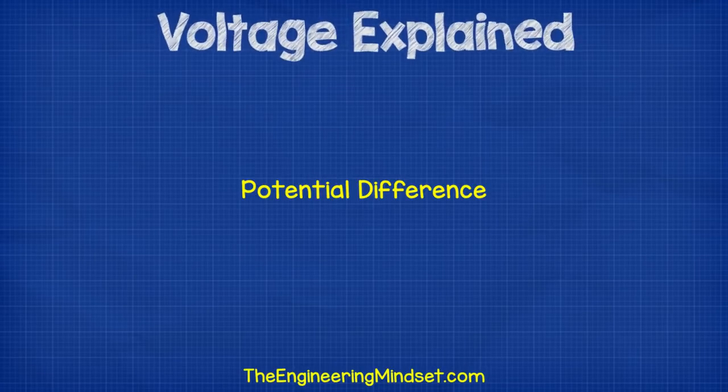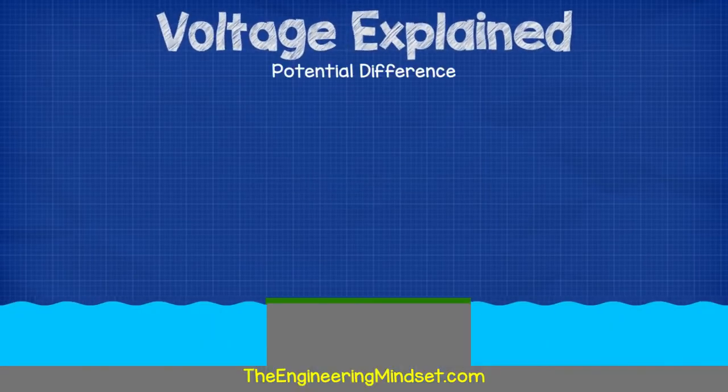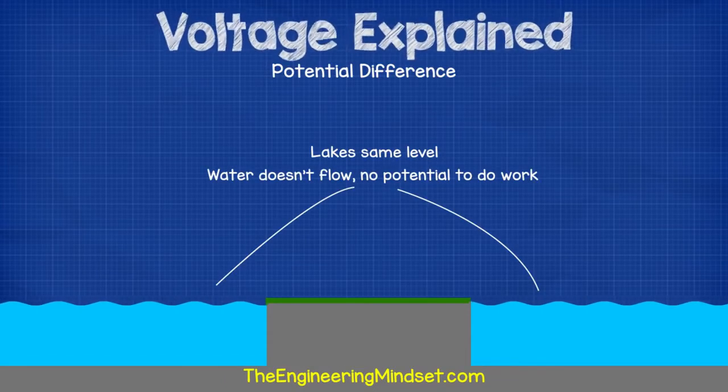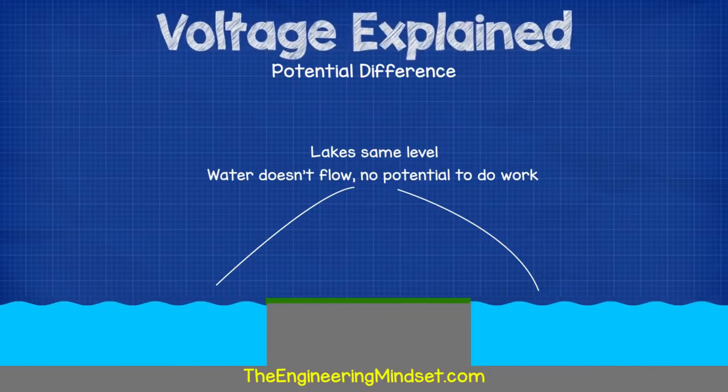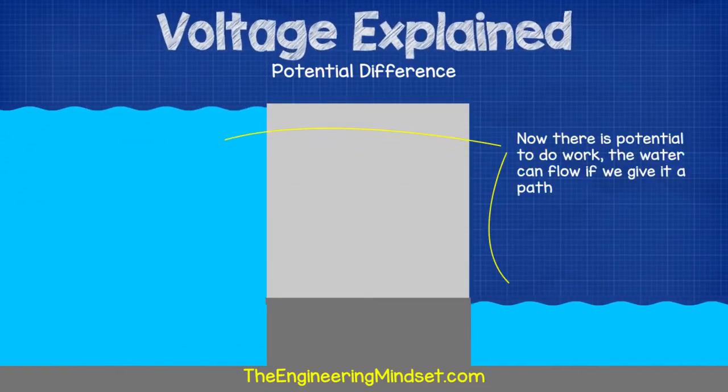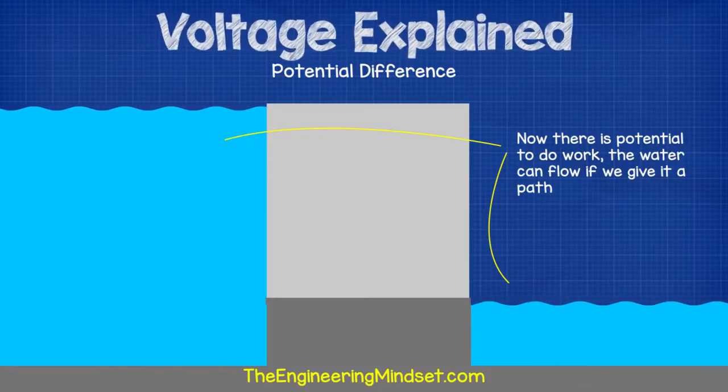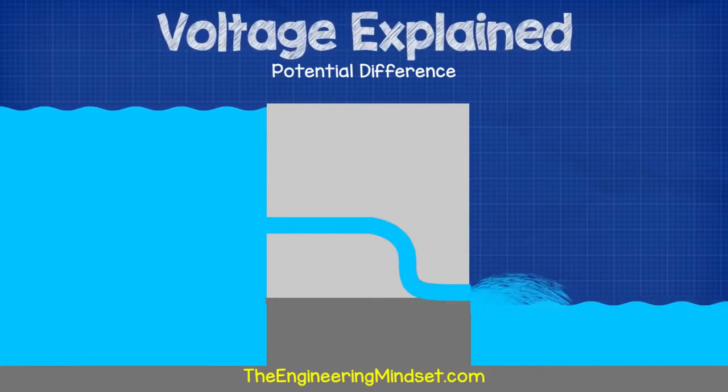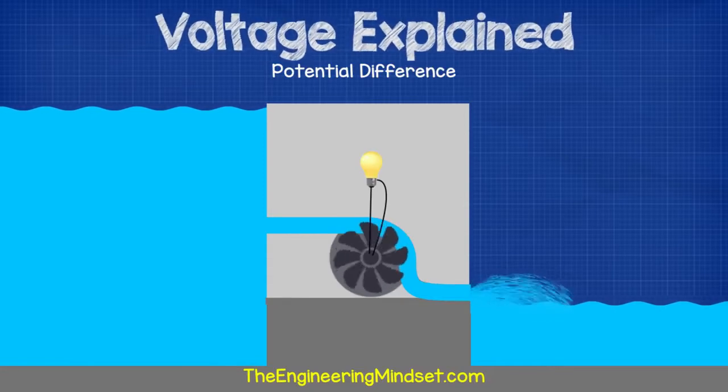Coming back to our water analogy, if we have two lakes at the same level, then there is no potential to do work. But if we put different heights between them and place a turbine in its path, we can use the energy to power a light or to do anything. This is how factories of energy work.